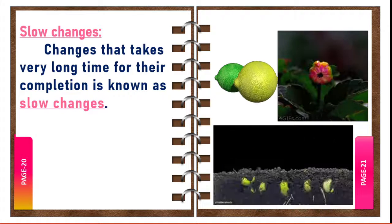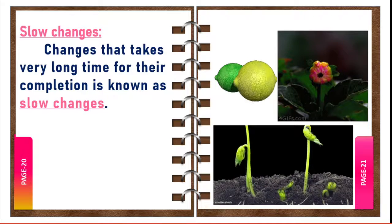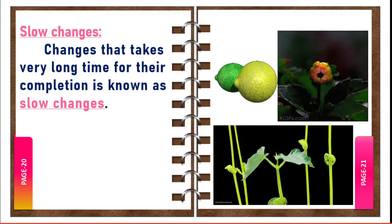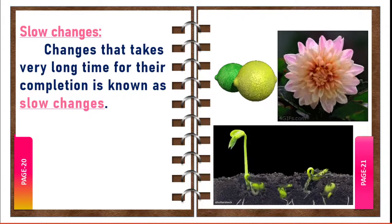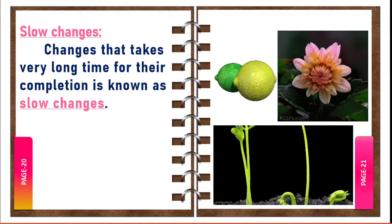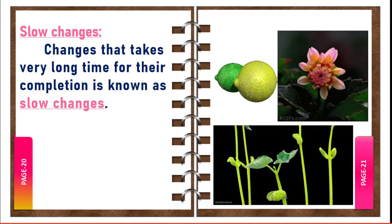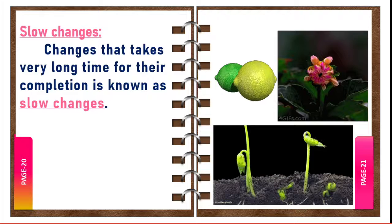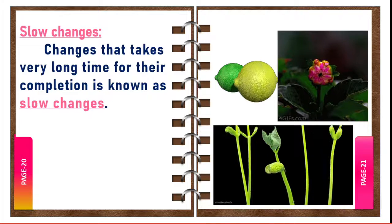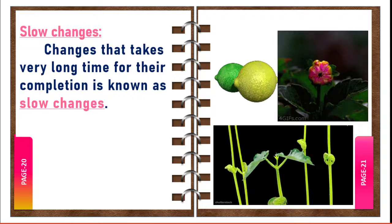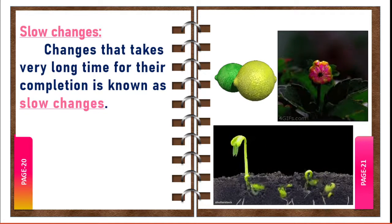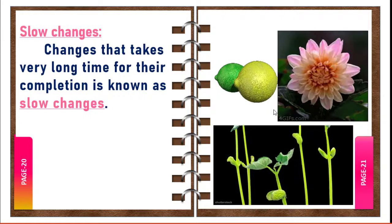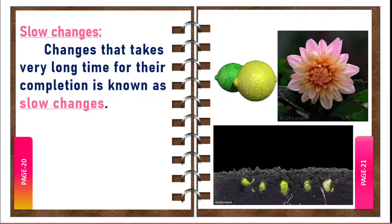Examples of slow changes: rusting of iron, growth of a child into an adult, ripening of fruits, germination of seeds into a plant or tree, curdling of milk, blooming of a flower, and formation of fossil fuels, which takes millions of years. Changes that take a very long time for their completion are known as slow changes.